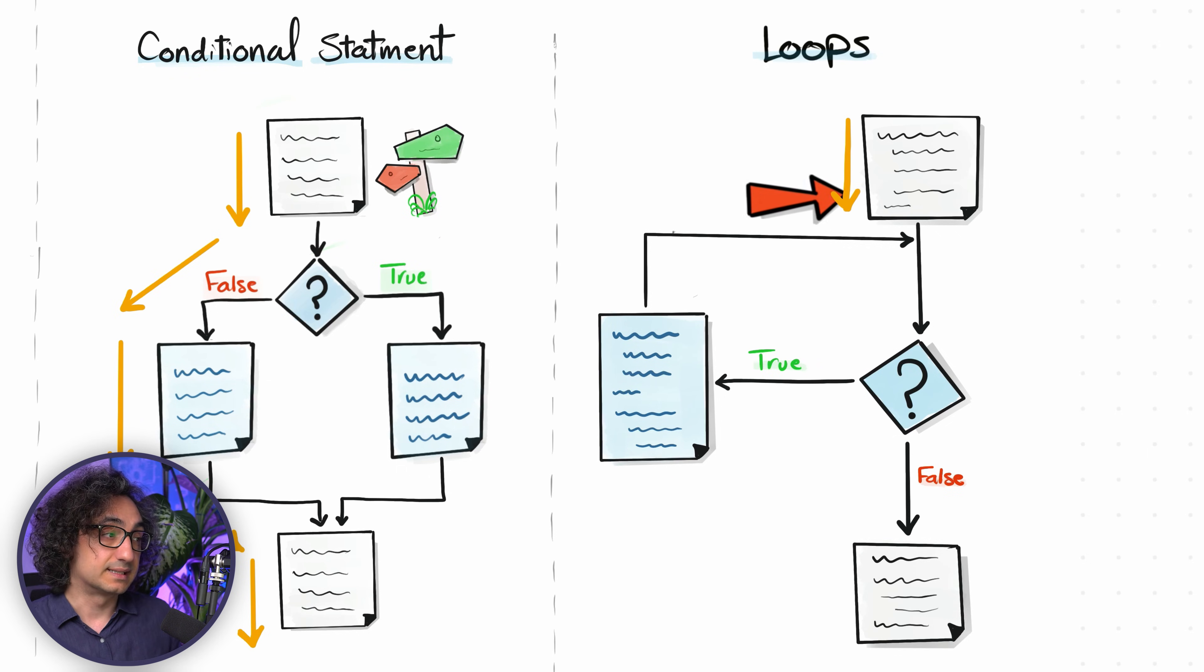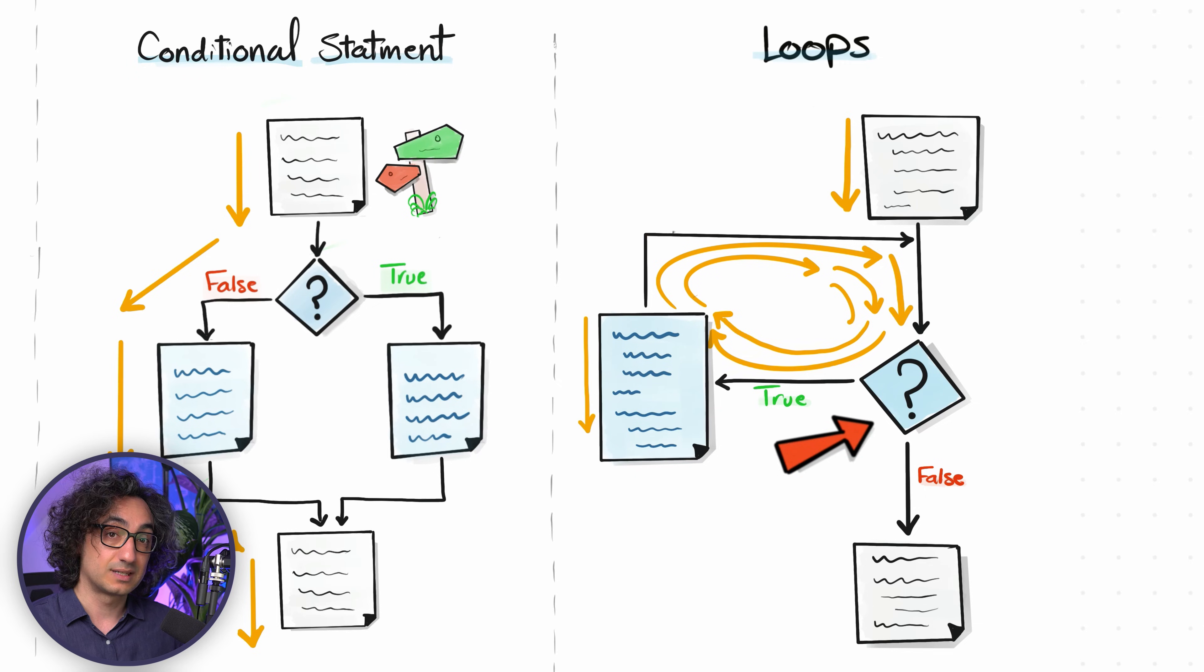What you're gonna do is build a question or a condition, and based on the answer, if it's true, then it's gonna go to the code that we want to keep repeating, execute it completely, and then go and ask the same question. If the answer is still true, Python gonna go again and execute the same code from the top to the bottom and then go back and ask the same question. As you can see, we have now the shape of a loop and Python keeps executing this block of code until we have a different answer. Once Python gets the answer that it wants, then it's gonna break the loop and exit and go to the rest of your code.